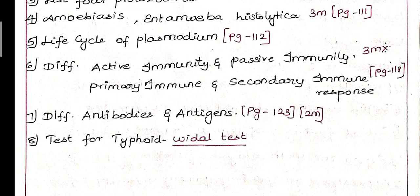Sixth question: Differentiate active immunity and passive immunity, or primary immune response and secondary immune response. These differentiation questions are on page 118. Seventh question: Differentiate antibodies and antigens, with definitions in a box on page 123, 2-mark question.